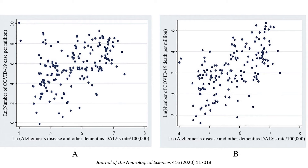Now let's look at a very recent paper published in 2020 on Alzheimer's disease and other dementias, expressed in disability-adjusted life years rate per 100,000, and number of COVID-19 cases per million. Again, we can see a moderately strong and significant correlation between these two variables. They looked at the rates of Alzheimer's disease and other dementias, and the number of COVID-19 cases per million at the country level, across different groups of countries and regions. Again, they did not look at individuals.